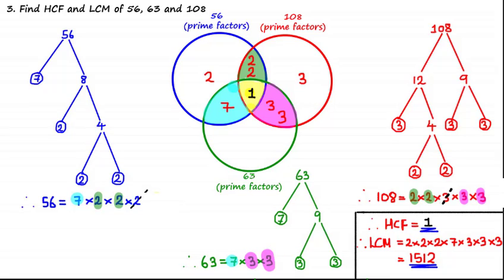In this particular case, using the prime factorization method is a lot more efficient than writing out a list of all of the factors and multiples of these numbers in order to calculate the highest common factor and lowest common multiple. I hope that was useful and I will see you in the next tutorial where we will be looking at some exam style questions.